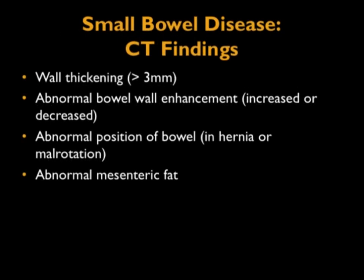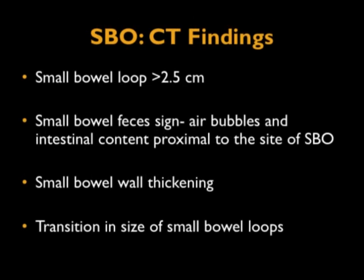Things we look for when evaluating bowel: wall thickening over 3 millimeters, abnormal enhancement — either increased with hyperemia or decreased, as in ischemia. We look for malrotation, abnormalities in mesenteric fat, dilated bowel loops over 2.5 cm. We look for the small bowel feces sign — air bubbles and intestinal content appearing proximal to the obstruction, which is a really good sign for finding the trigger point. We also look for wall thickening and transition points.